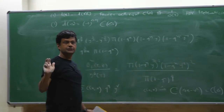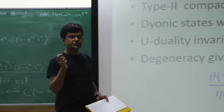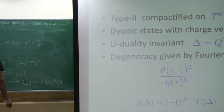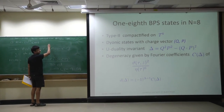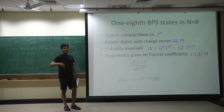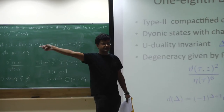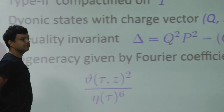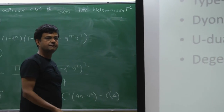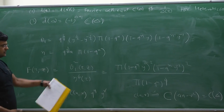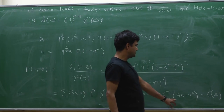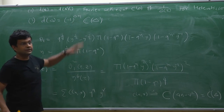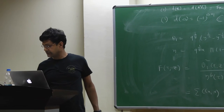Given a charge — in this theory there are 56 charges, half electric and half magnetic — you specify all 56 integers and then calculate the duality invariant Δ = Q²P² − (Q·P)², which is some number. You just look at this function and read off the Fourier coefficient C(Δ). The T-duality invariants are Q² and P². Q is a 28-dimensional vector; you take the Lorentzian square, which is the T-duality invariant. In the end the degeneracy depends only on Q²P² − (Q·P)².